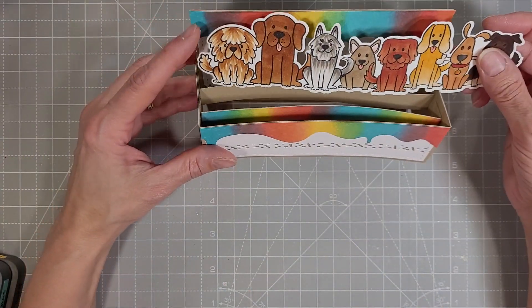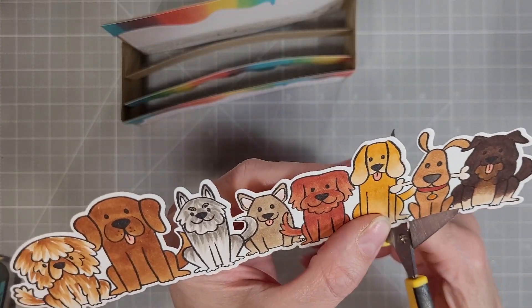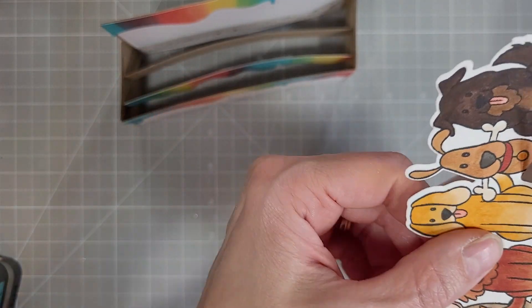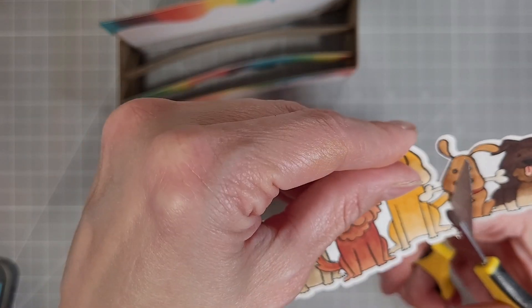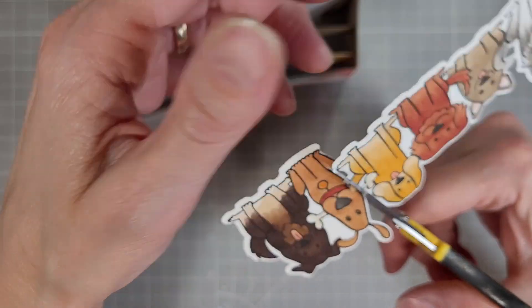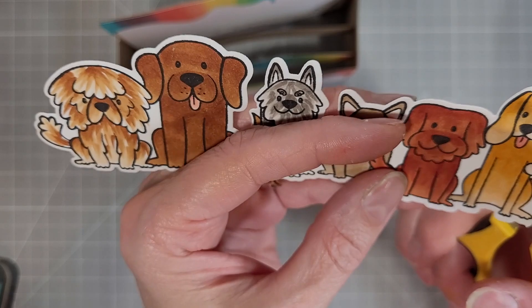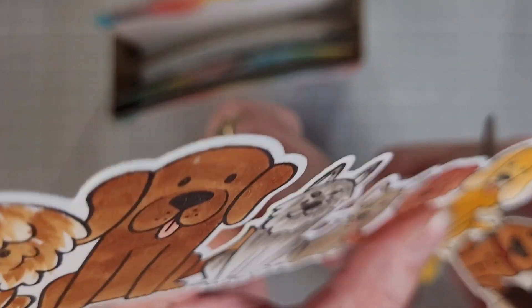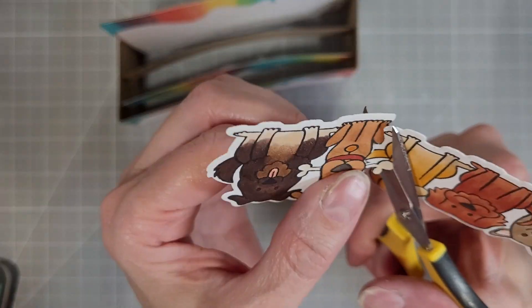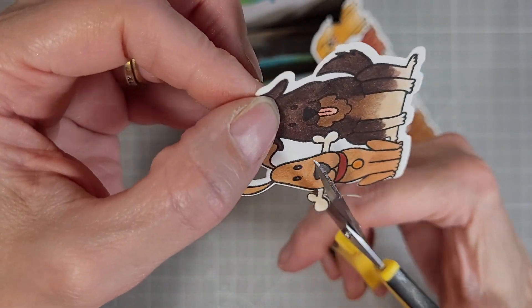Next we're going to add our puppies. I had already colored these with Copic markers and made some of them look like dogs we've had in the past and just tried to create a large variety of dogs on this strip. Now this is a strip that will fit on a slimline card so it is around eight and a quarter inches long and the inside of our box is only about seven inches. So I decided to trim off the last two puppies and I'm fussy cutting out this bone that overlaps the puppy next to it.